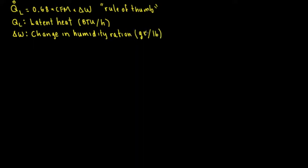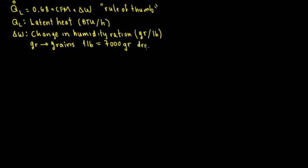GR is actually not grams, it's grains. What grains are is basically a drop of water. In order to understand that better: in one pound of water, we're going to have 7,000 grains. That's why we use GR — one pound of water equals 7,000 grains, which is like small droplets of water.